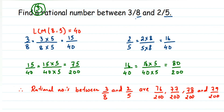Your answer may not match mine because you might have multiplied by a different number such as 7, 8, or 10 — that's completely fine since there are infinitely many rational numbers. It's not necessary that your answer matches your textbook, my answer, or your teacher's answer. To verify, just divide 3 by 8 and 2 by 5 in decimal, then divide your answers in decimal too, and check that they fall in between.